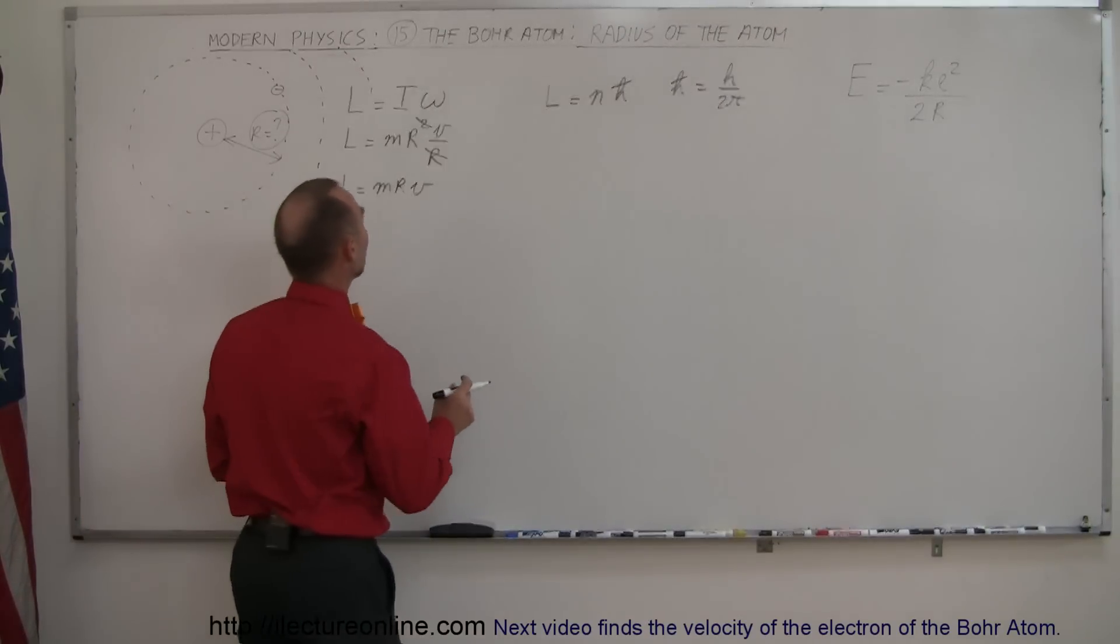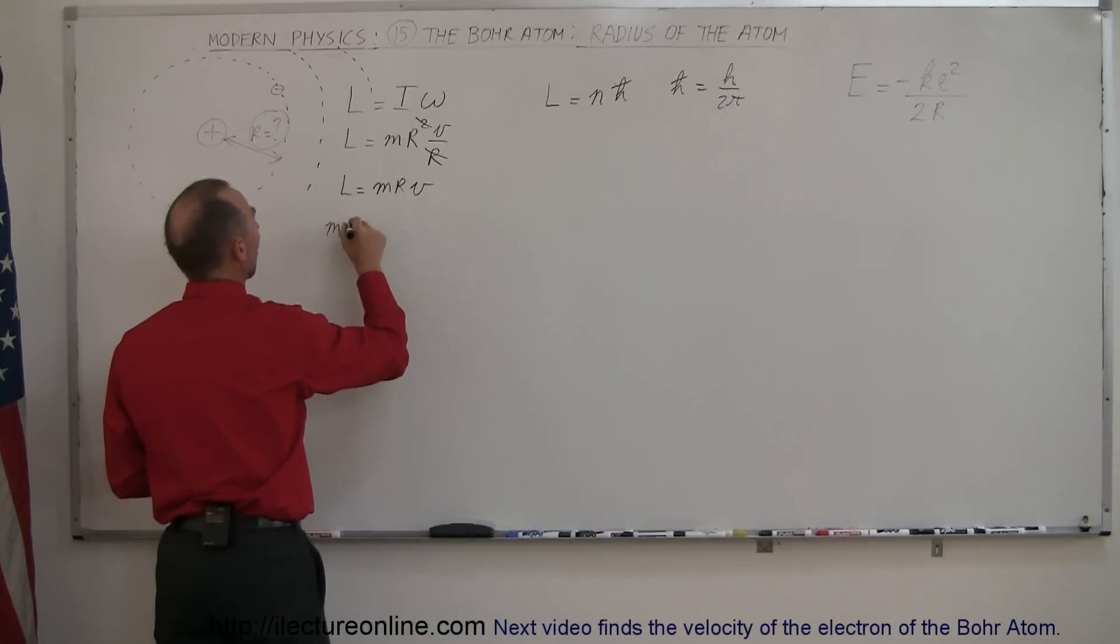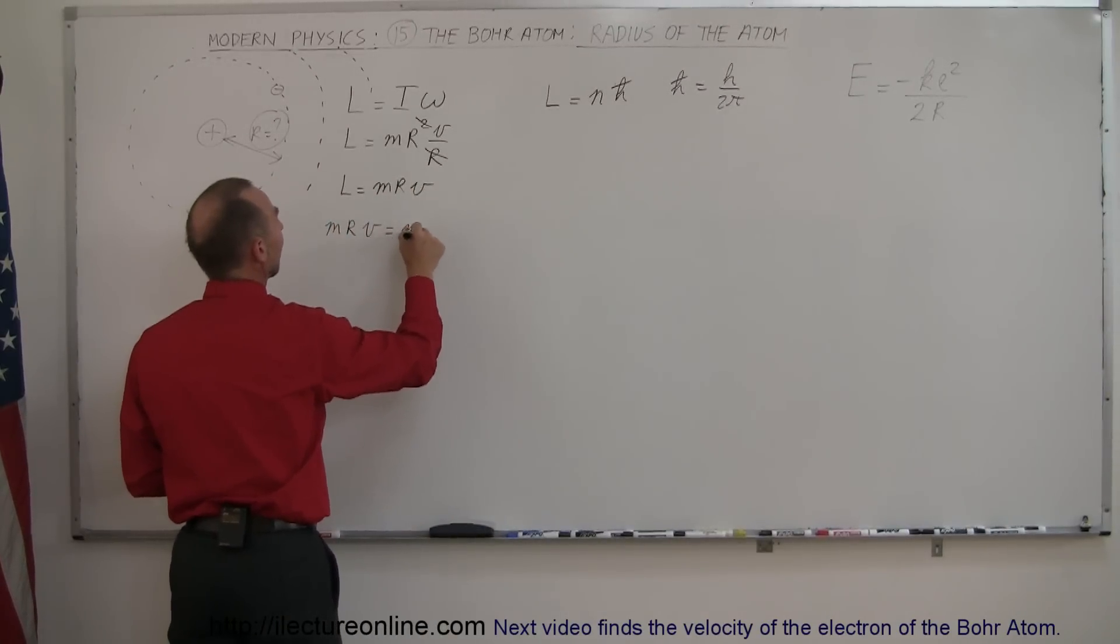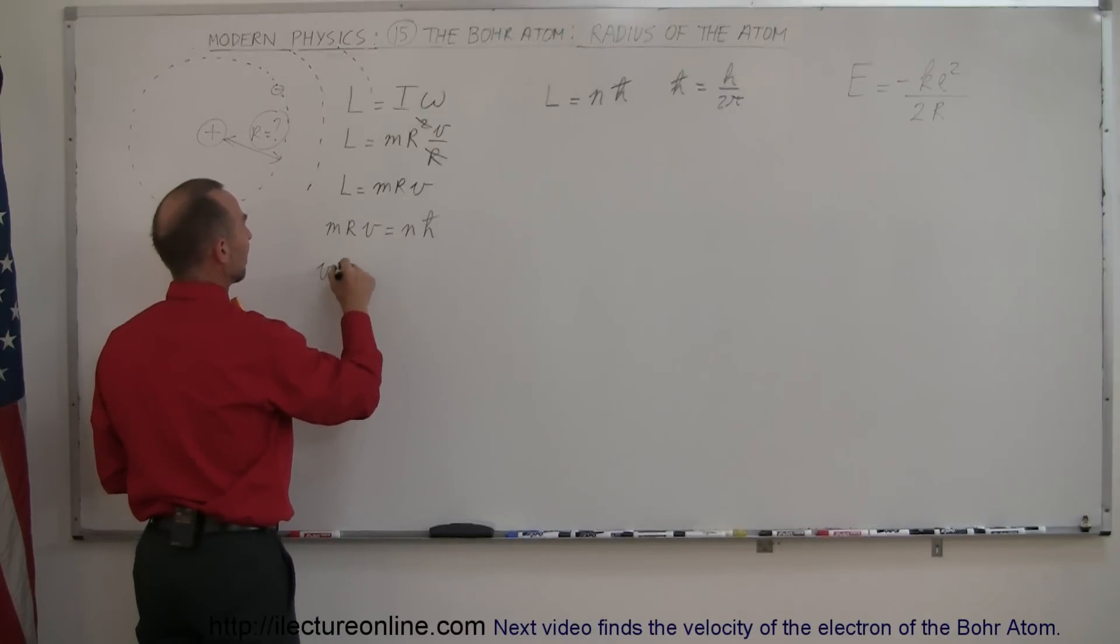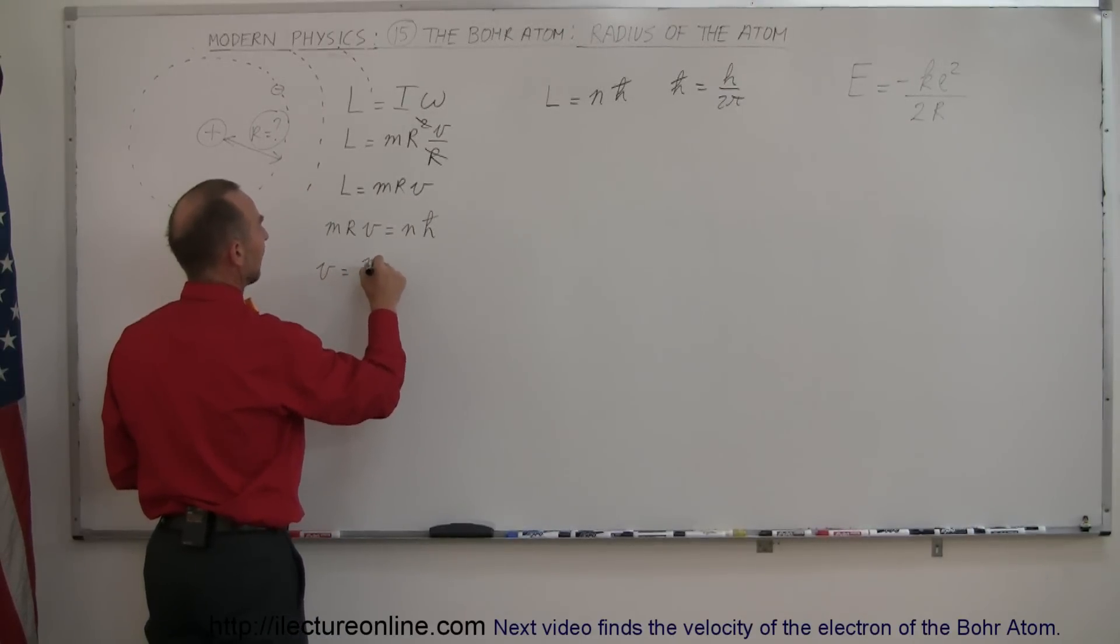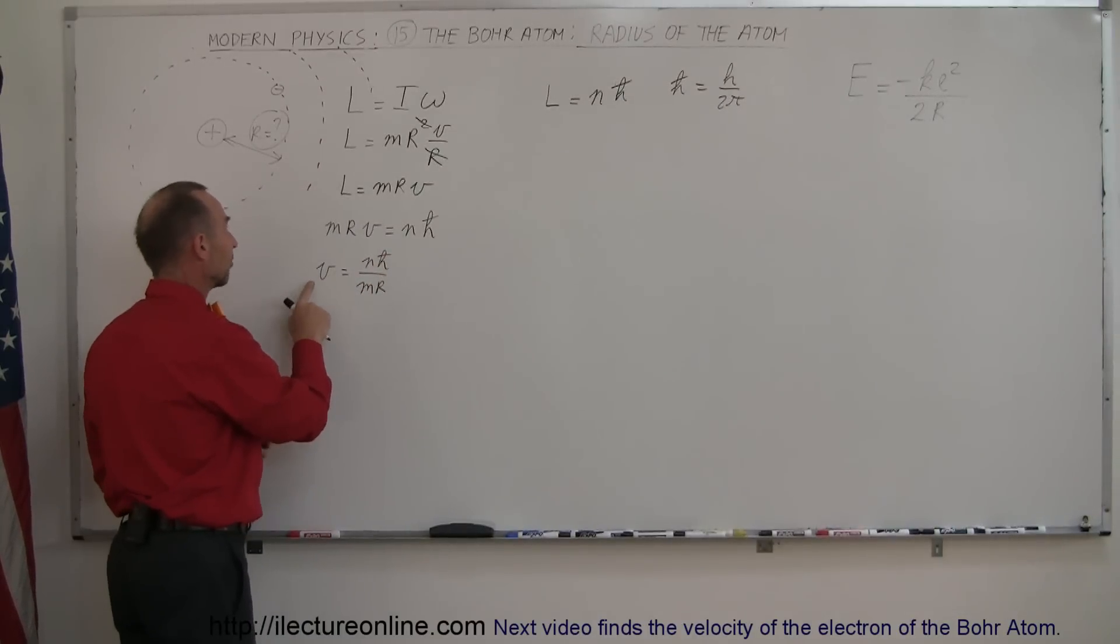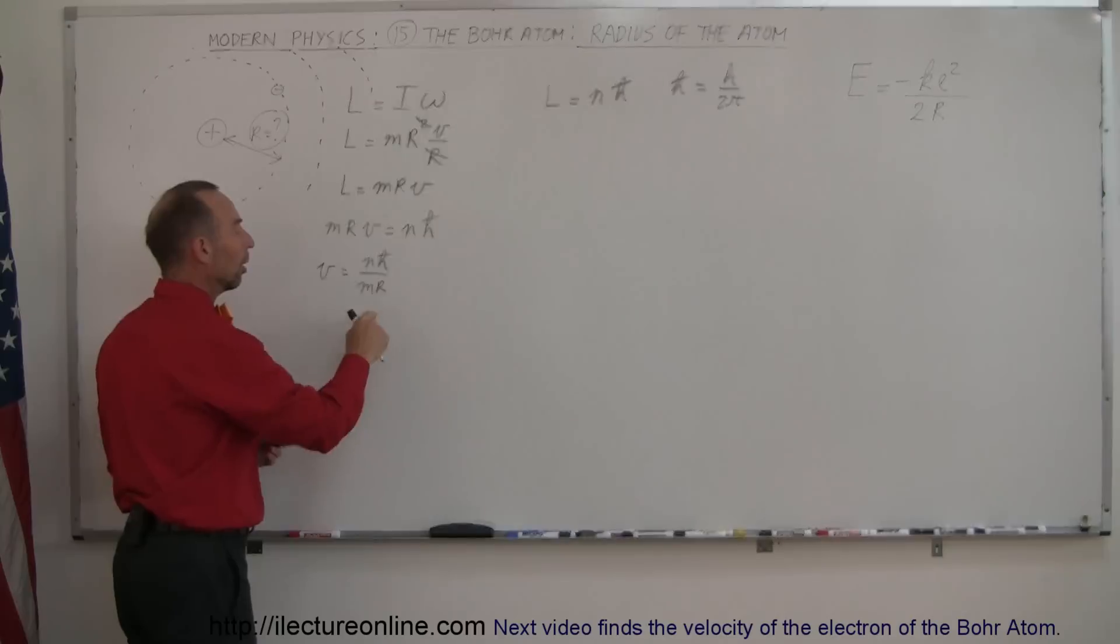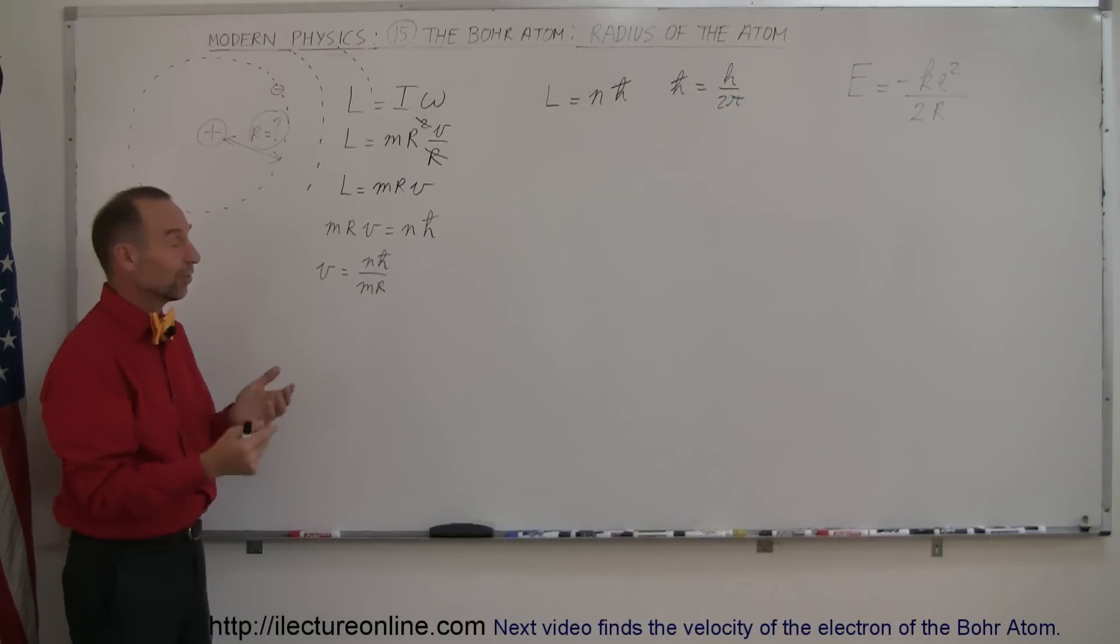If that's true, we set this equal to that, so we can say that mrv = nℏ. If we solve this equation for v, we get v = nℏ/(mr). Now we have a relationship between the velocity of the electron and r, though we don't know the velocity without knowing the radius.